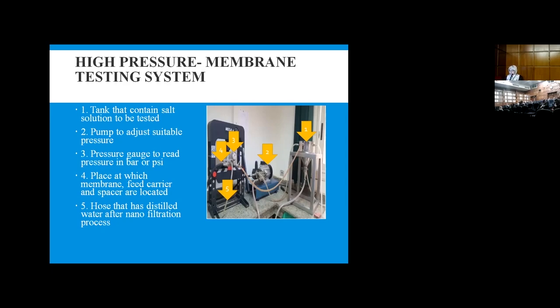Number three, pressure gauge to know the pressure. Number four, a place at which membrane and tube spacer are located. Number five, the outlet where distilled water gets out and can be tested to know the efficiency of the membrane.